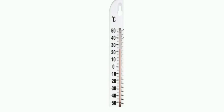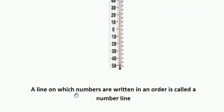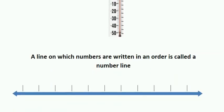Today we are going to learn how to show numbers on a number line. A line on which numbers are written in an order is called a number line. Here you can see a number line with markings on it.